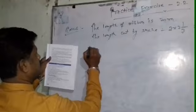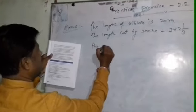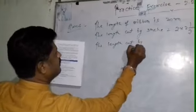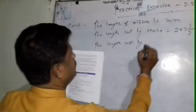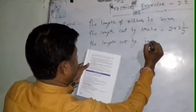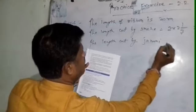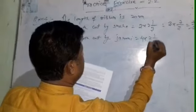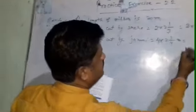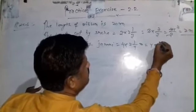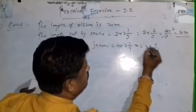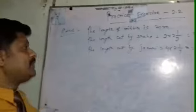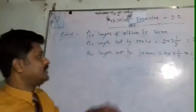Next, the length cut by Janani: four pieces of two whole one by four meters. That means 4 multiplied by 9 by 4, which equals 9 meters. So nine meters is cut by Janani.